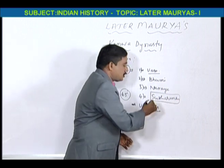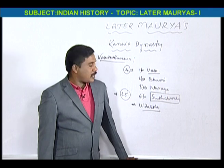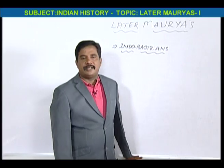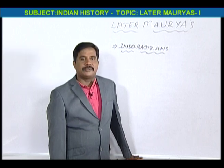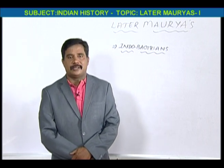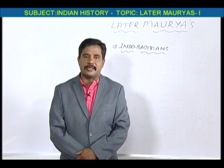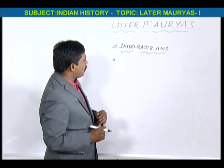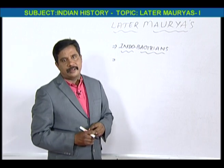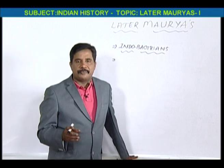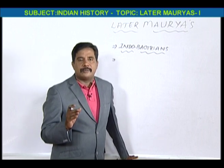The last Kanva, Susharma Kanva, was defeated by the Shatavahanas. After the local dynasties, India was ruled by foreign kingdoms — Indobactrians, Shakas, Parthians, and Kushans. All foreign kingdoms came to India and captured Indian territories, but they joined the Indian stream and eventually followed Hindu traditions, becoming part of Indian civilization.